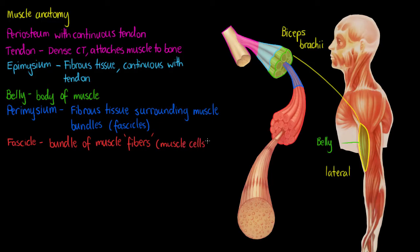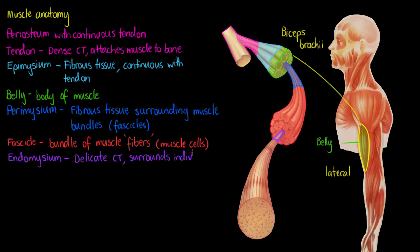Now that we've made it all the way down to the individual cells, we have one more layer of connective tissue called the endomysium. Endomysium means 'within muscle.' So remember: epimysium is on the outside of the muscle, endomysium is within the muscle, and the perimysium sits between those two. The endomysium is a more delicate, wispy connective tissue that surrounds those individual cells.